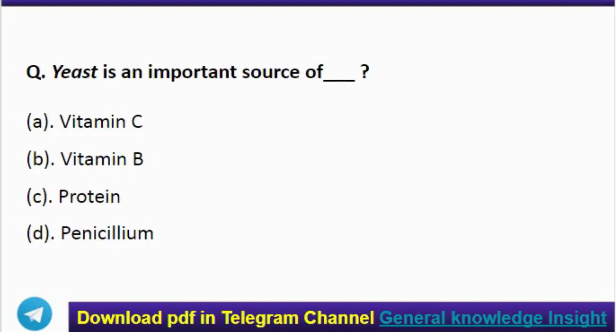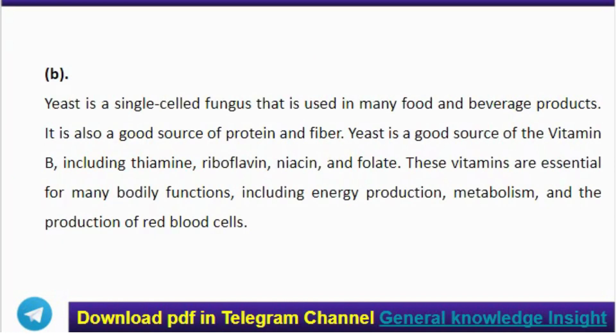Next question: yeast is an important source of which of the following? Correct answer: option B, vitamin B. Yeast is a single-celled fungus used in many food and beverage products. It is also a good source of protein and fiber. Yeast is a good source of vitamin B, including thiamine, riboflavin, niacin, and folate. These vitamins are essential for many bodily functions, including energy production, metabolism, and the production of red blood cells.